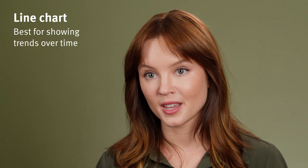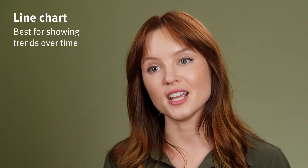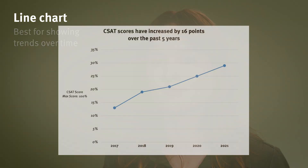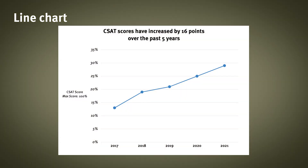Next up, line charts. If you want to show a data trend over time, a line chart will work better than a bar chart. If you do create line charts, be sure to use data point markers to clarify where in the timeline you collected the data. This example shows the trend of one company's CSAT scores over a five-year period, with each data marker — shown by a blue dot — indicating when the data was collected.